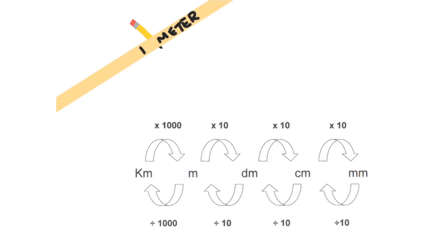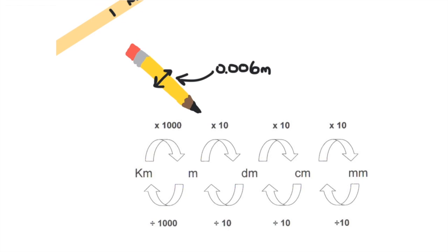The width of a pencil in meters is about 0.006 meters. That's six thousandth of a meter. It's not very convenient to say it that way. But we can convert that into millimeters, a much more convenient unit. To convert units, we use a method called dimensional analysis.